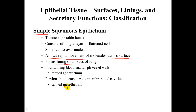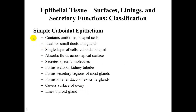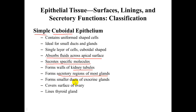The second specific type is simple cuboidal epithelium — simple indicating one layer, cuboidal indicating the shape. It is ideal for small ducts and glands, with a single layer of cube-shaped cells. It absorbs fluids across the apical surface and can also secrete specific molecules. It forms the walls of the kidney tubules, the secretory regions of most glands including exocrine glands, covers the surface of ovaries, and lines the thyroid gland.